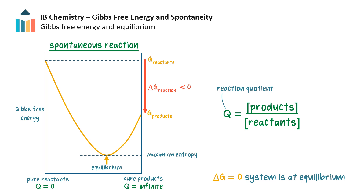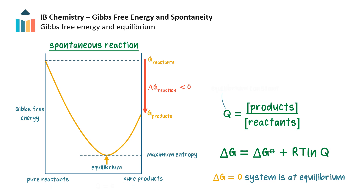Gibbs free energy is related to the reaction quotient, and this is the equation. The relationship helps predict whether a reaction will proceed in the forward or reverse direction if we know the temperature. At equilibrium, the reaction quotient is referred to as the equilibrium constant K. When a spontaneous reaction is at equilibrium, the Gibbs energy is at its lowest — zero. The reaction will not proceed spontaneously left or right anymore, as this would increase the Gibbs energy of the system and decrease the entropy of the universe, which is unfavourable.